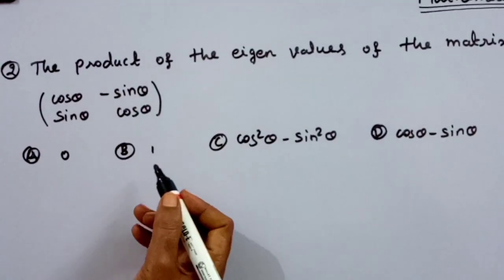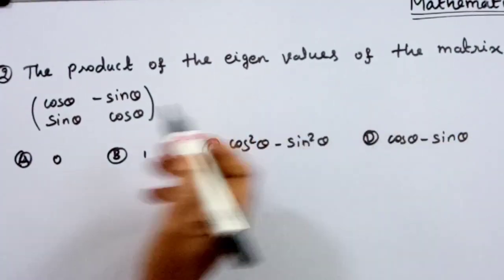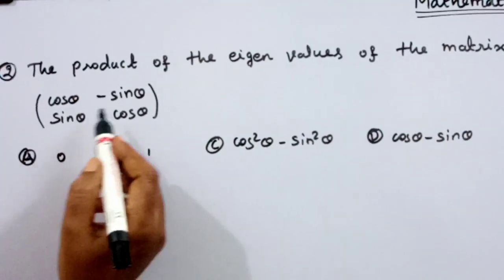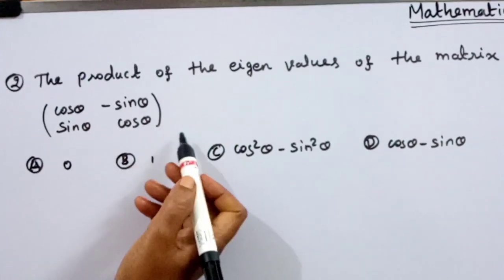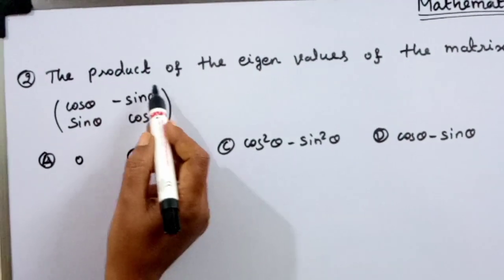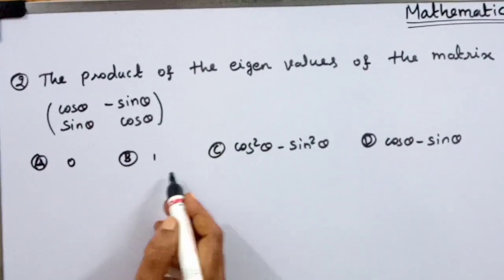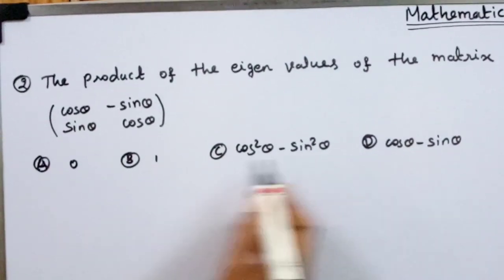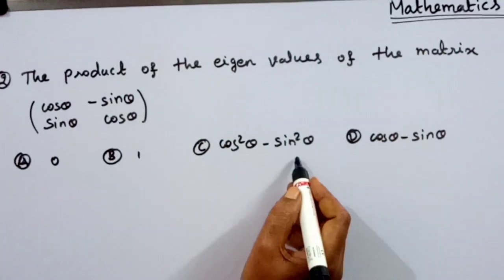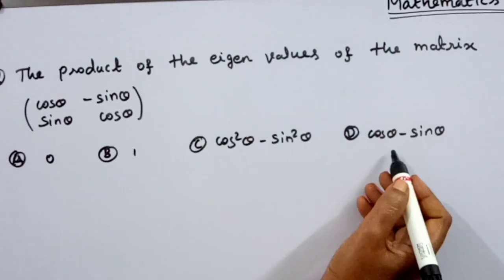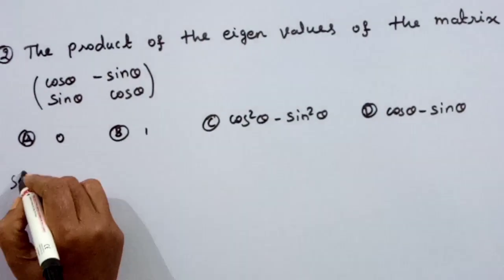Now a second problem: find the product of the eigenvalues of the matrix with entries cosθ, minus sinθ, sinθ, cosθ. We can find the product of the eigenvalues of this matrix. We have four options: first option is 0, second is 1, third is cosθ minus sinθ, and last option is cosθ plus sinθ. We discuss the solution.